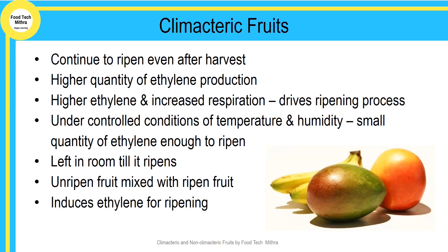Climacteric fruits are those fruits which are able to ripen even after harvesting. They tend to emit quite a large amount of ethylene gas, due to which climacteric fruits continue to ripen even after harvesting. Increased respiration and ethylene production drives the ripening process. Under controlled conditions of temperature and humidity, only a small quantity of ethylene is enough to drive the ripening process. The fruits are left in the room till they ripen. Sometimes, unripened fruit is mixed with ripened fruit, which will also induce ethylene for ripening.